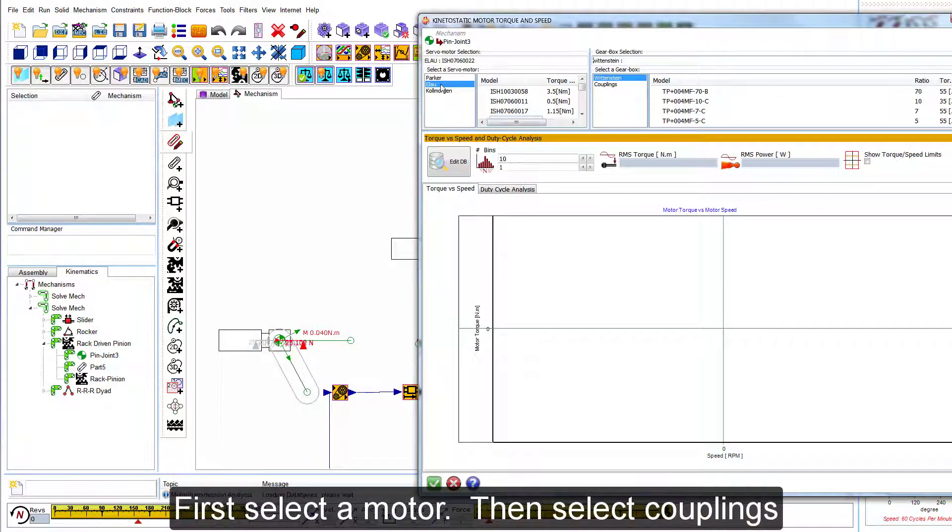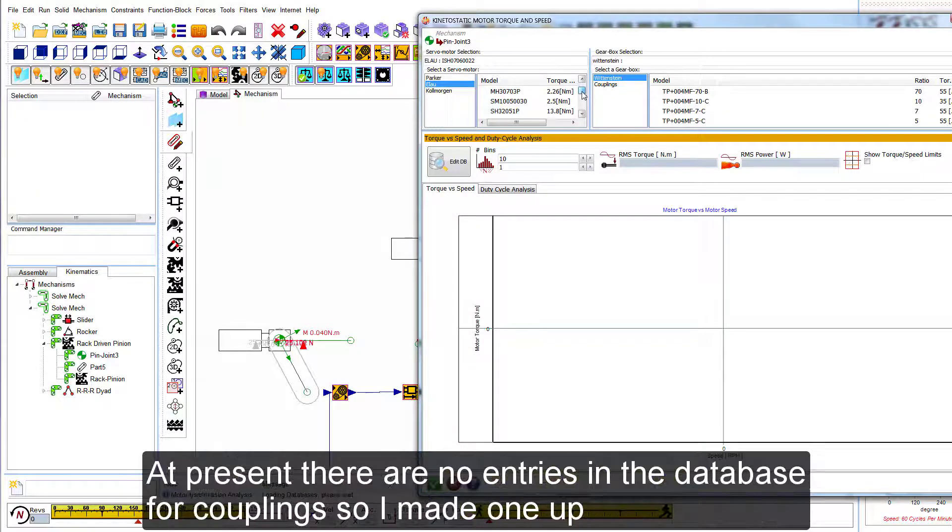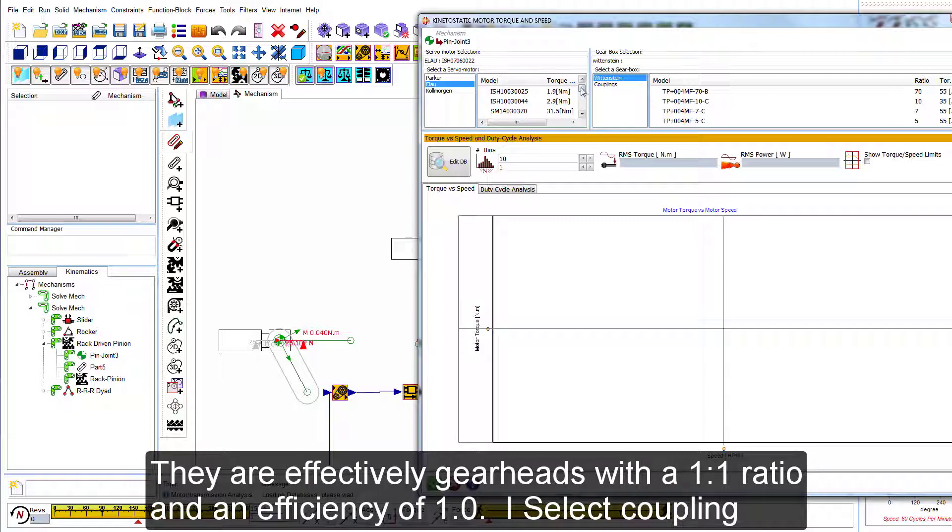First, select a motor, then select the coupling. At present there are no entries in the database for couplings, so I made one up. They are effectively gear heads with a 1 to 1 ratio and an efficiency of 1. I select the coupling.